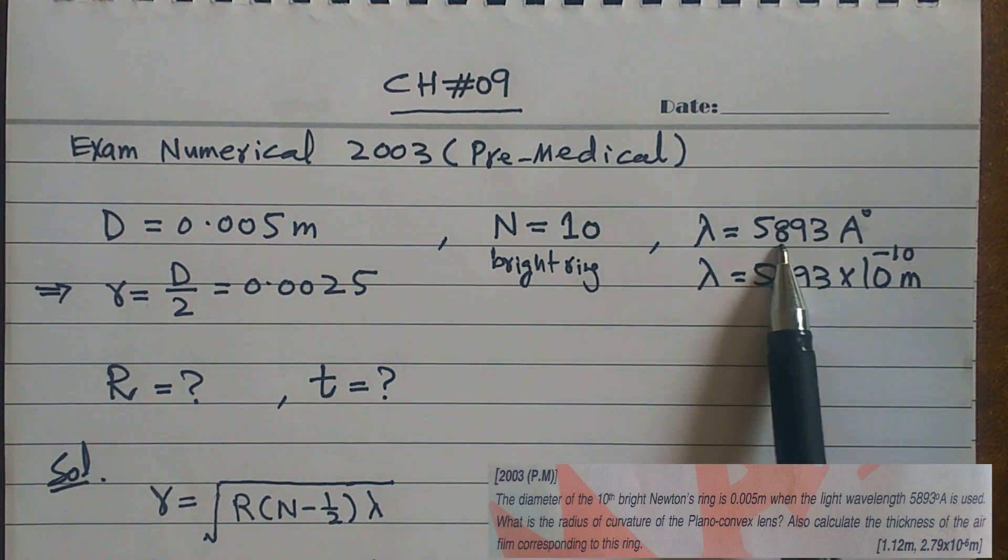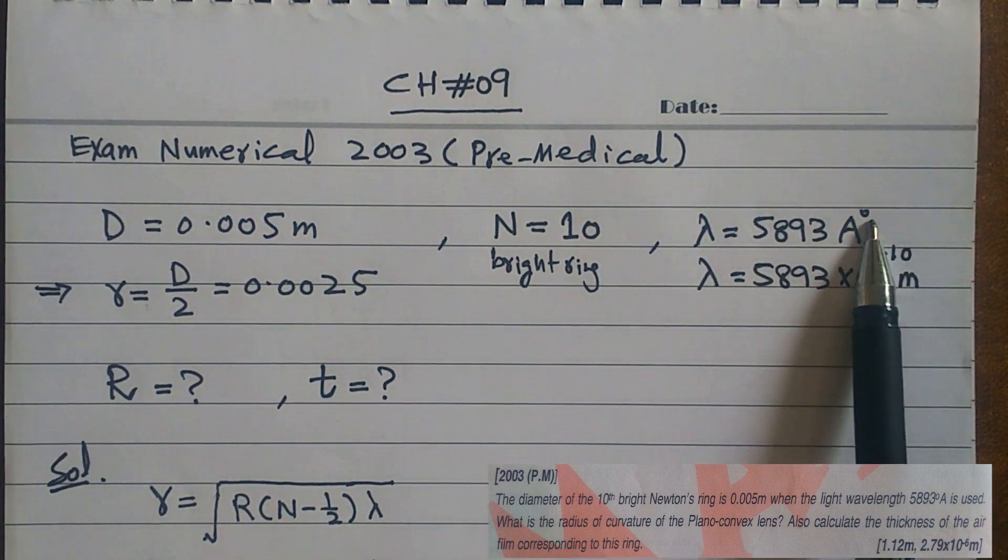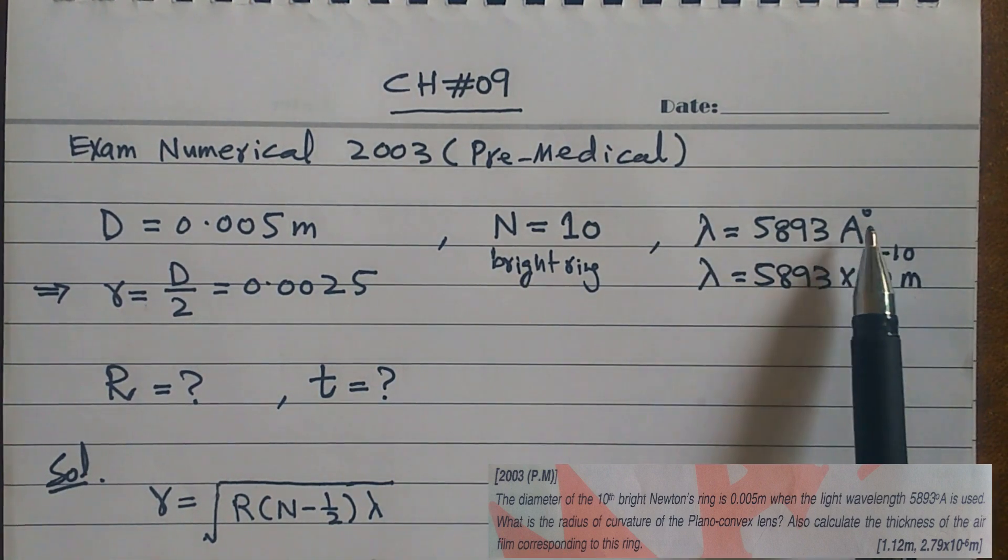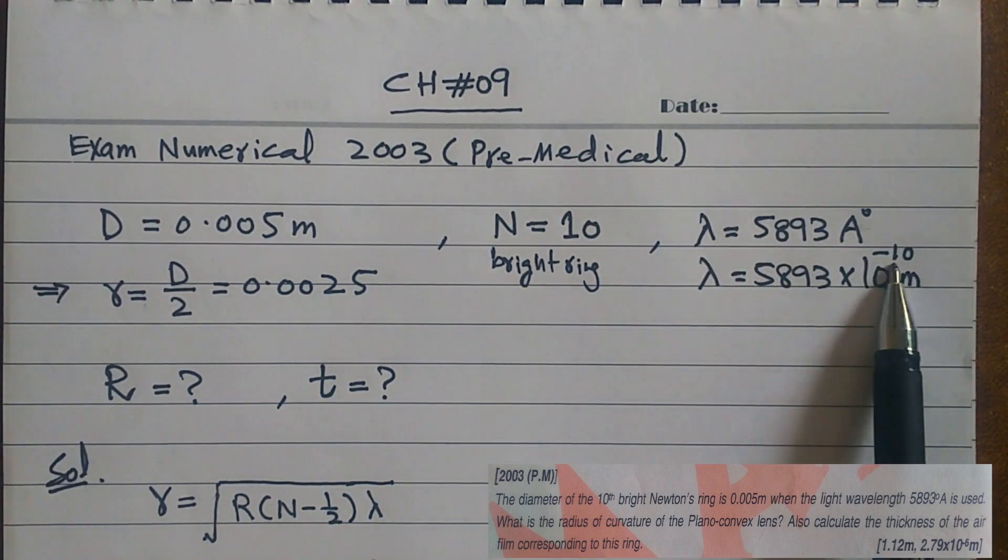Light which is 5893 angstrom. So we don't need angstrom, we have the unit meter. We have a wavelength in meters, so we write angstrom times 10 to the minus 10 meters.